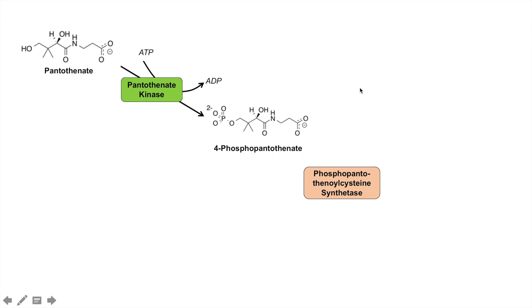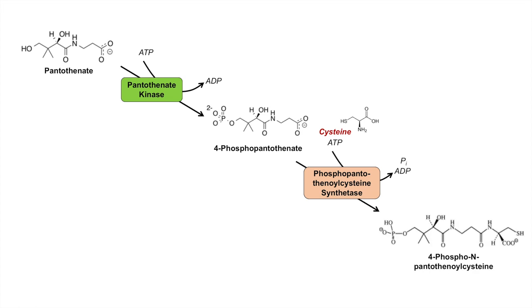The next enzyme that acts on 4-phosphopantothenate is phosphopantothenol cysteine synthetase. This actually takes the amino acid cysteine — this is the step whereby we use the amino acid cysteine, so the second step in the pathway is where cysteine comes into play. We also use ATP in this process. This leads to essentially adding the backbone of cysteine onto 4-phosphopantothenate to give us 4-phosphopantothenoyl cysteine. The ATP is hydrolyzed into an inorganic phosphate and ADP. We can see here that we are increasing the size of this molecule as we go along in the process.